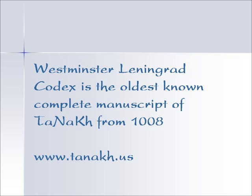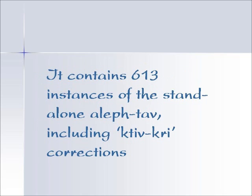It's very interesting that in the Westminster Leningrad Codex there are exactly 613 instances of the standalone Aleph Tavs. These include the Kativ-Kri corrections — Kativ-Kri means that one thing is written but a different thing is to be read, and that is a whole other lesson in itself.